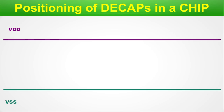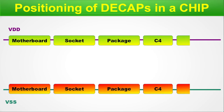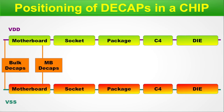Positioning of DCAPs in a chip. Here we will talk about the entire chip including packaging and where all the DCAPs are located. Along the VDD power line and VSS ground line, across multiple chip components — the motherboard, socket, package, and die — we have bulk DCAPs, motherboard DCAPs, package DCAPs, and on-die DCAPs. These are the full set of DCAPs in a chip assembly. Today's focus is on the silicon DCAPs used during VLSI design.